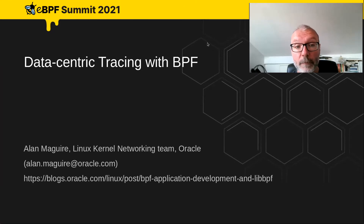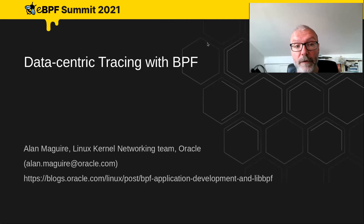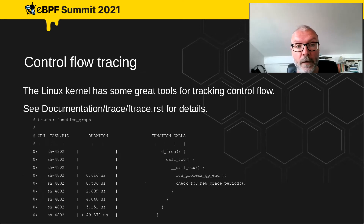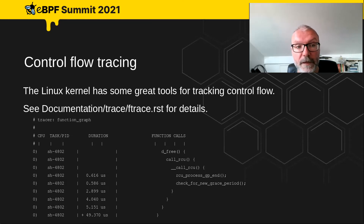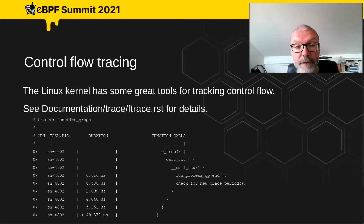I'm Alan McGuire, on the Linux networking team at Oracle, and I want to talk about data-centric tracing with BPF. Within the Linux kernel we've got some great tools for tracing control flow. ftrace is one great example — the function graph tracer makes control flow actually look like code, so it's very easy to see what's going on.